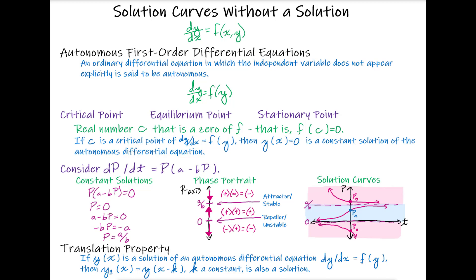Once we have those values, we can construct something called a phase portrait. In a phase portrait, we draw the vertical axis — the p-axis in this case — and label on that axis where the constant solutions fall: zero and a over b. Then we check the values above, in between, and below all of those constant solutions to find whether our differential equation is increasing or decreasing on those intervals.